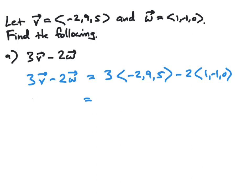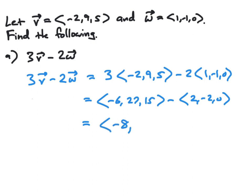When we use scalar multiplication on a vector, we multiply each component by that scalar. We subtract the two vectors component-wise. The first components give negative 8, the second components give 27 minus something, which is 29, and 15 minus 0, which is 15. Therefore, 3V minus 2W is the vector (-8, 29, 15).